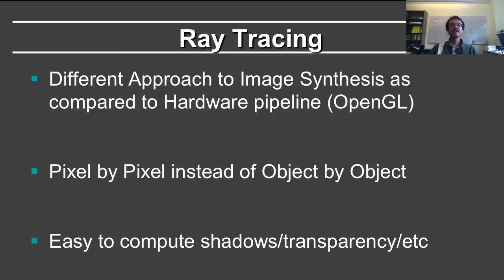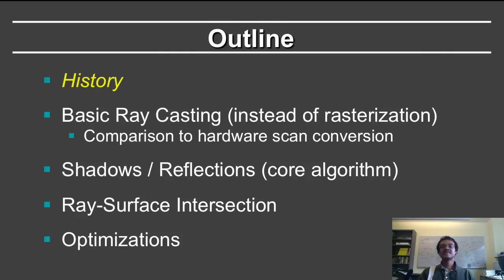There are ways to create shadows and reflections in OpenGL — in fact, many video games have them. However, they are much easier to do in ray tracing, and there are many effects in ray tracing that come for free or are very difficult to create with the hardware pipeline. We will start with a brief history of ray tracing, then talk about basic ray casting and how it differs from rasterization, shadows and reflections as the core algorithm, ray-surface intersection, and finally a few optimizations.